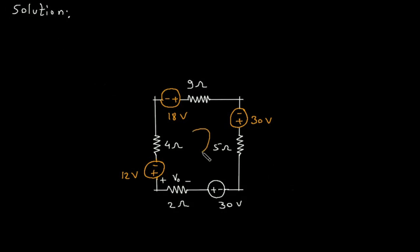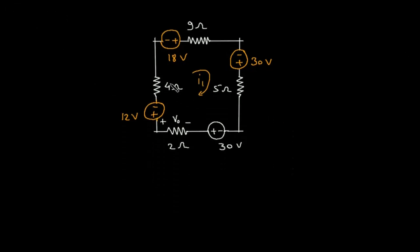Now let's say this is current I1. We will apply KVL. Let's say we will start from here, from this point. Plus 12, or directly 12, plus 4 times I1, then minus 18.